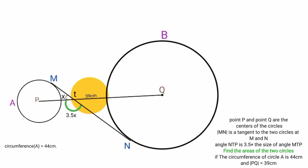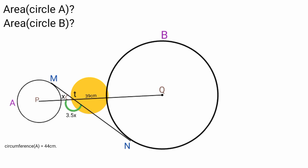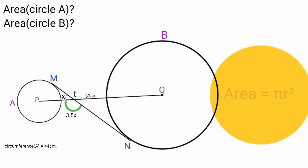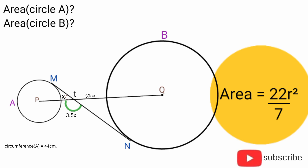So how can we find the areas of the circles? The formula for the area of a circle is pi R squared. Pi is a constant which we all know to be 22 over 7, and R is the radius. Now to find the area of the circles, what we need is the radius of each.